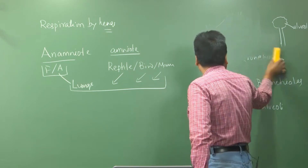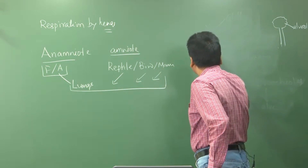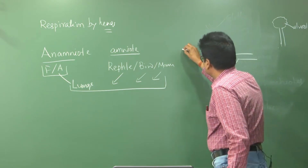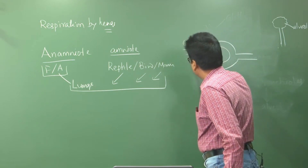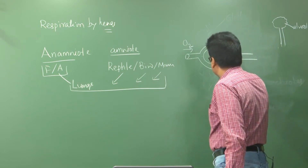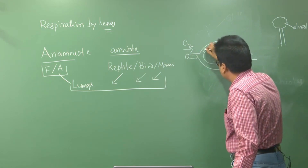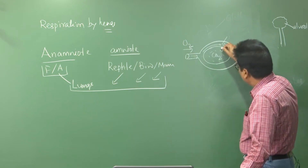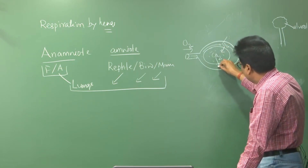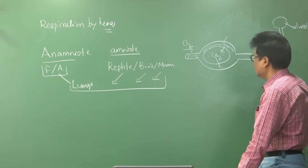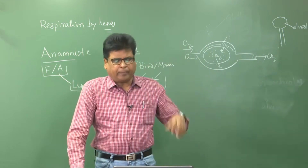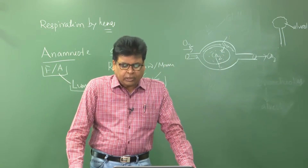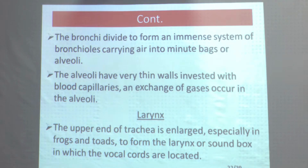The unit of the lung is the alveolus. The alveolus is surrounded by blood capillaries. Oxygen from the blood enters into the alveolus, while carbon dioxide from the alveolus passes into the blood circulation. The alveoli have very thin walls invested with blood capillaries, and exchange of gases occurs in the alveoli.